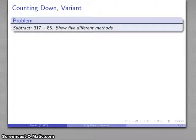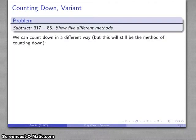Now, we don't have to count down this way. We can actually count down by a different method. Note that this is still the method of counting down, but maybe I go back 17 to 300. That's easy. Then 15 back to 285, and then down 200 to 85.